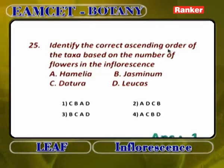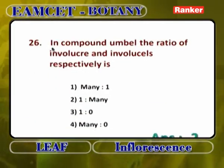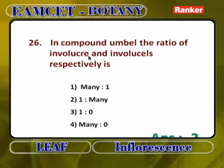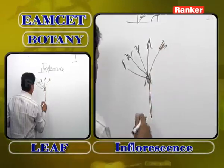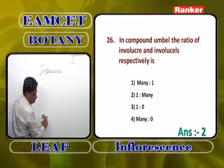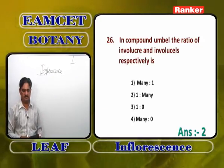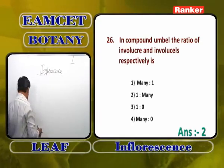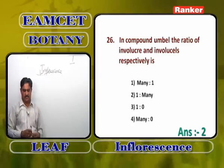Identify the correct ascending order of taxa based on number of flowers in an inflorescence — answer: C, B, A, D — Datura (1), Jasminum (3), Heliotrope (many, fewer than 14), Leucas (14). In a compound umbel, the ratio of involucre to involucels is 1:many — involucre is only one, involucels are many. This is the characteristic of Apiaceae/Umbelliferae plants such as Coriander, Daucus.